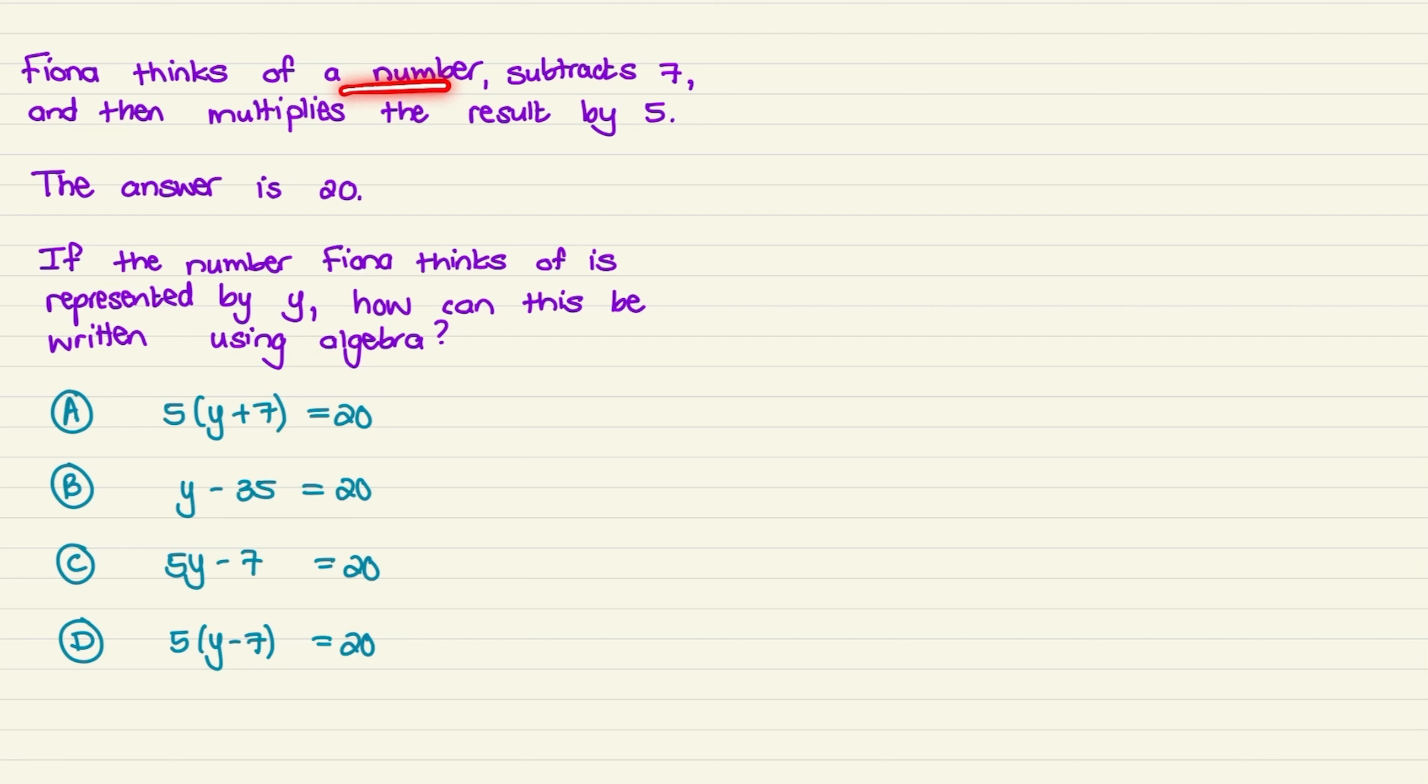Fiona thinks of a number, subtracts 7, and then multiplies the result by 5. The answer is 20. If the number Fiona thinks of is represented by y, how can this be written using algebra? And here we have 4 possible answers.